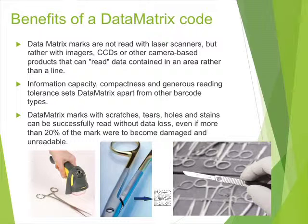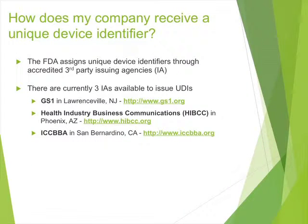Another benefit of data matrix codes is that directly marking them on a device doesn't alter the ergonomics of the tool — it doesn't impact how a surgeon or user will touch and interact with the device. To receive a unique device identifier, you work with one of three issuing agencies: GS1 in Lawrenceville, New Jersey; Hibic in Phoenix, Arizona; or ICCBBA in San Bernardino, California. These companies will help you navigate and begin receiving the unique device identifier.